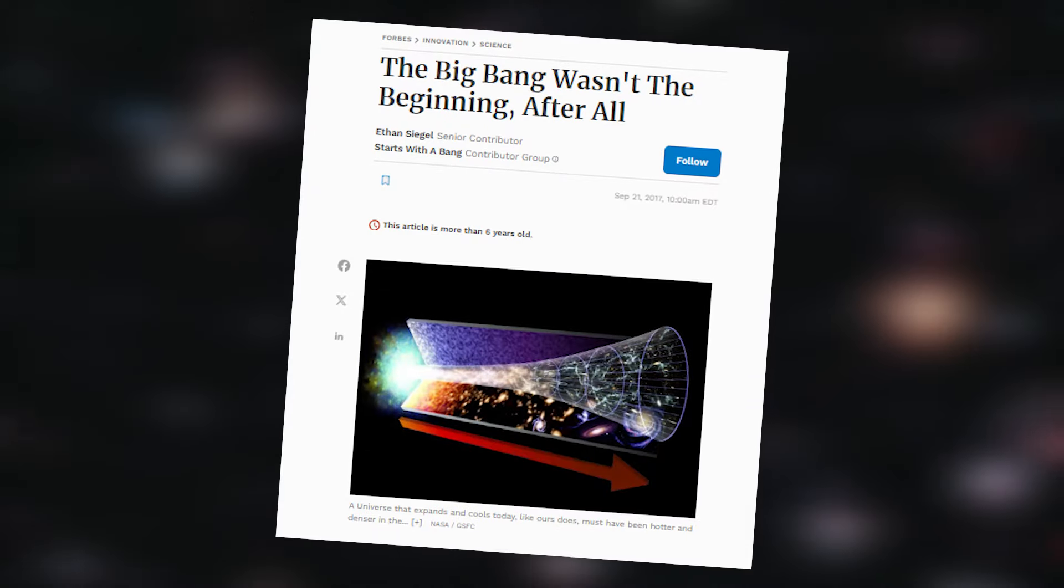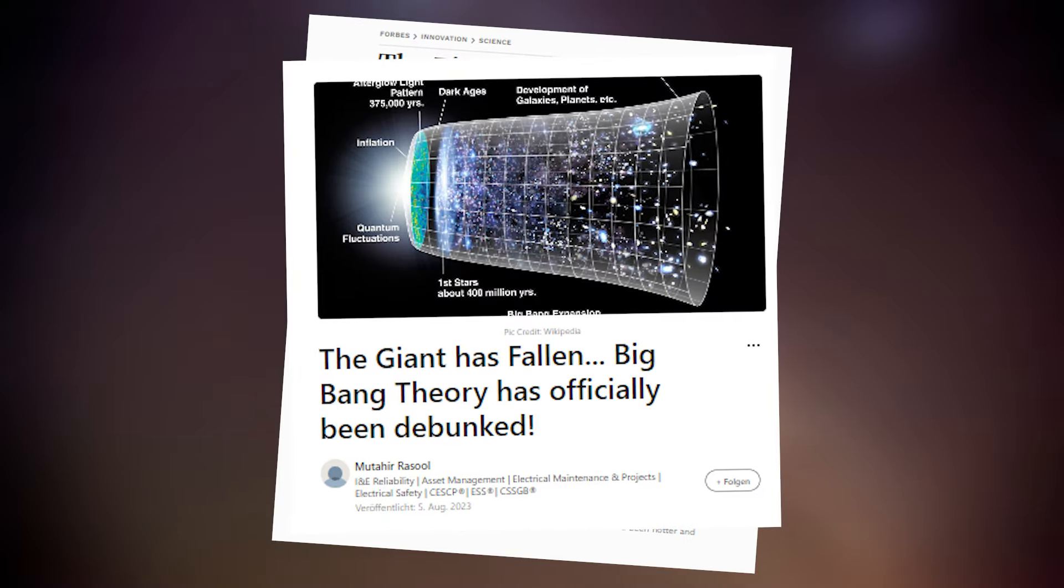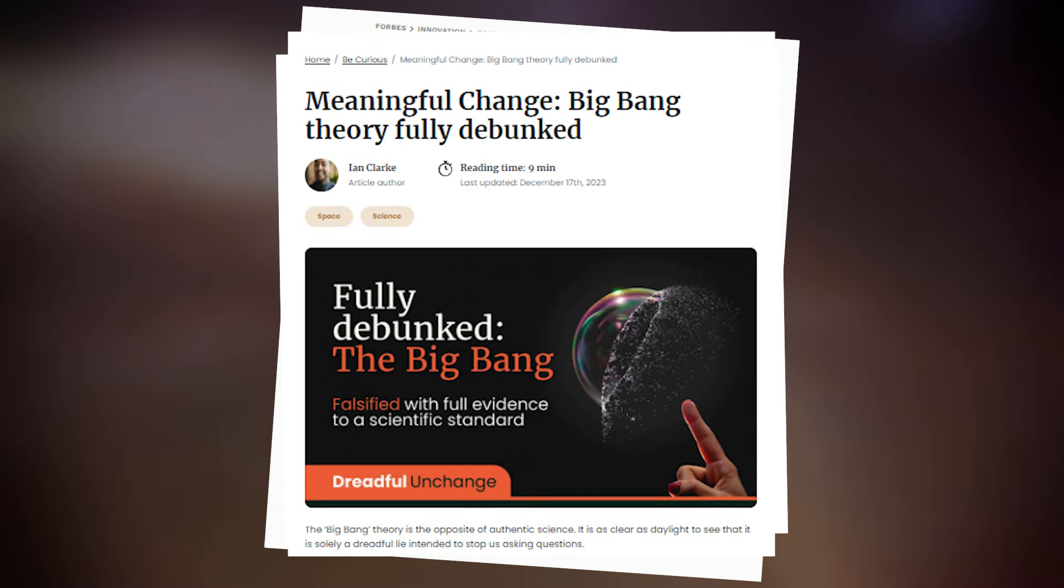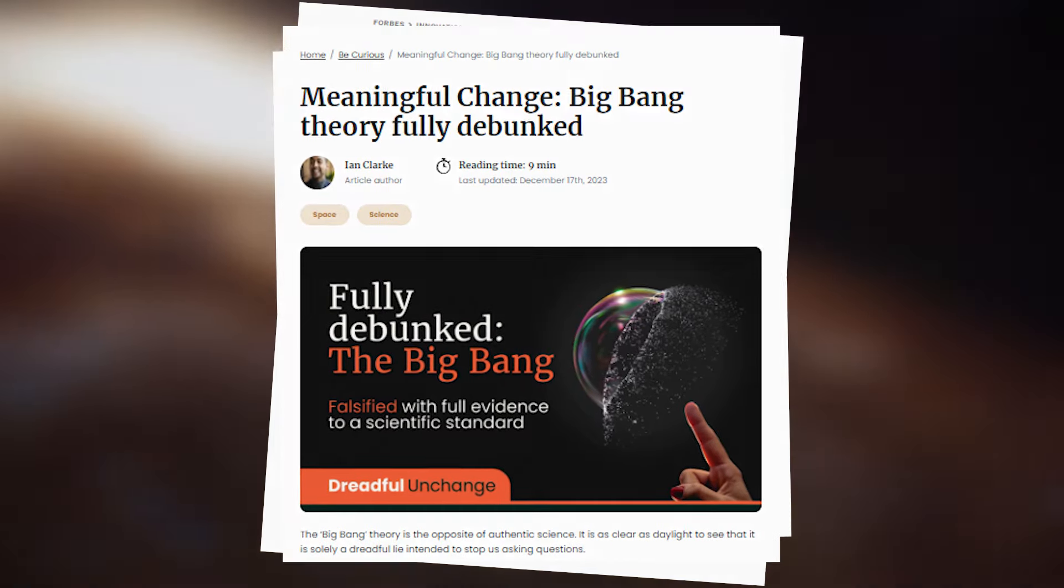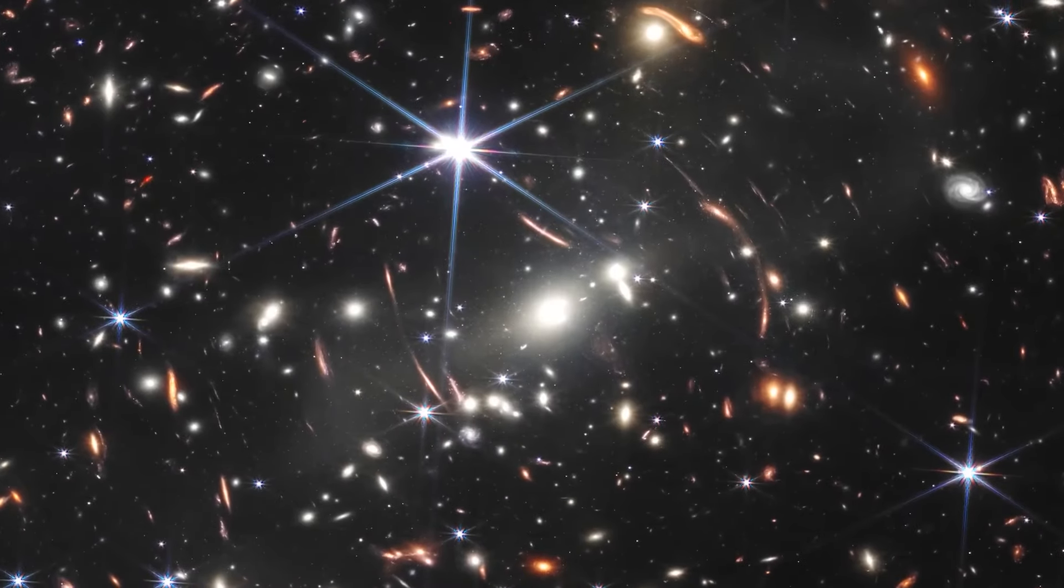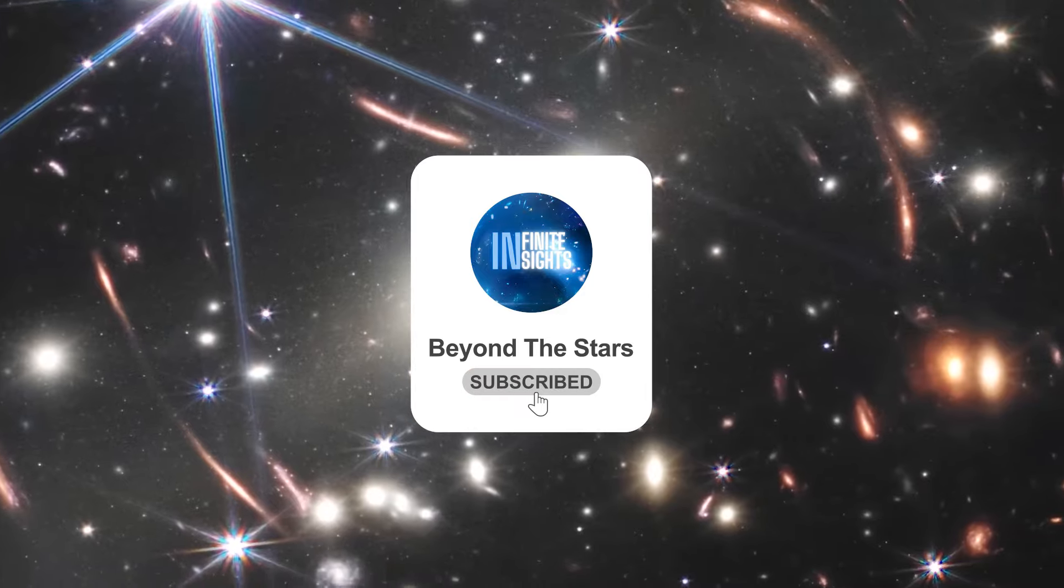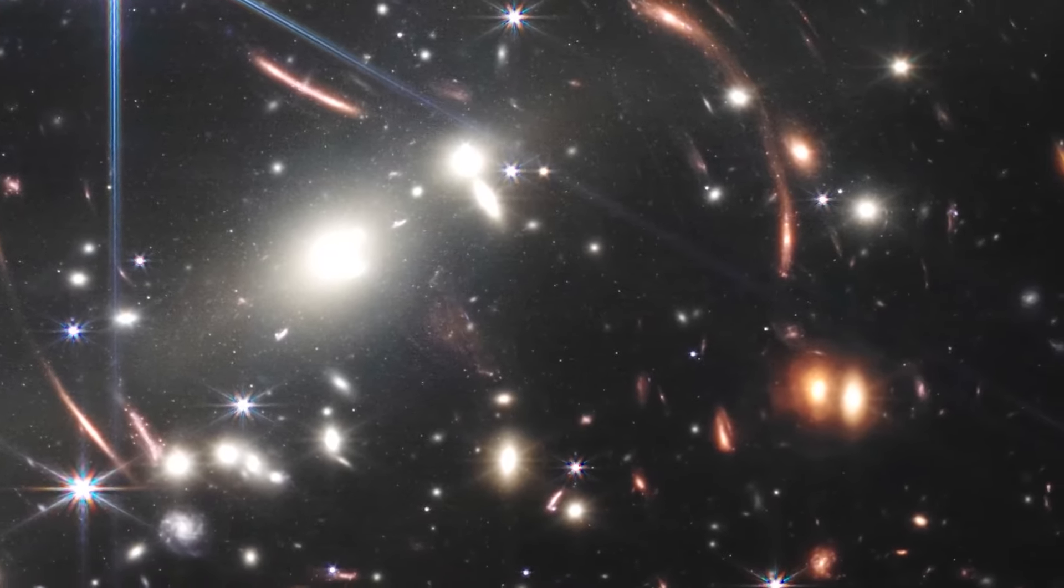However, popular science publications on the James Webb Telescope photographs claim that the Big Bang never happened, thus generating panic among cosmologists. How do these images suggest the inaccuracy of the Big Bang Theory? Let's decipher the evidence presented by the telescope itself to clear up any doubts.